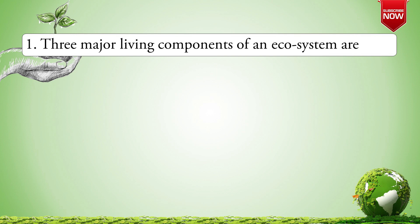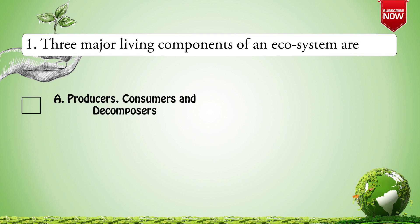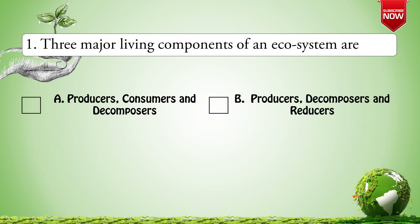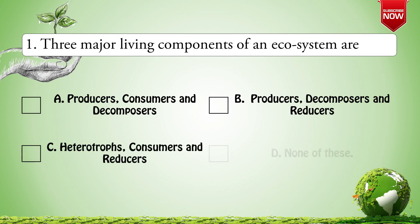The first question is: the three major living components of an ecosystem are — Options are: A. Producers, Consumers and Decomposers; B. Producers, Decomposers and Reducers; C. Heterotrophs, Consumers and Reducers; D. None of these. The correct option is A: Producers, Consumers and Decomposers.